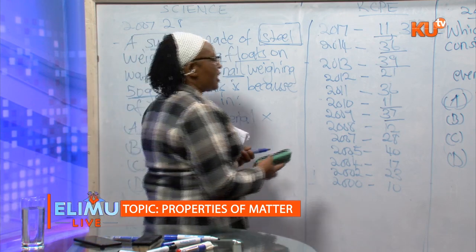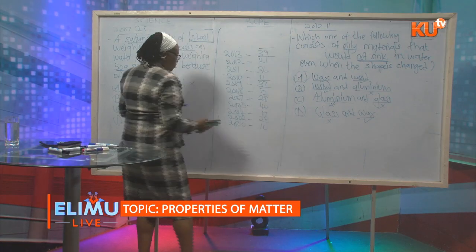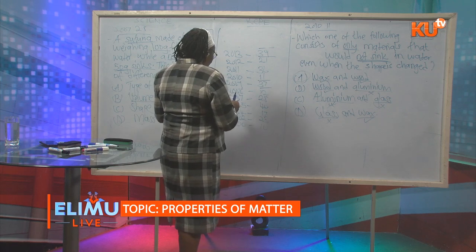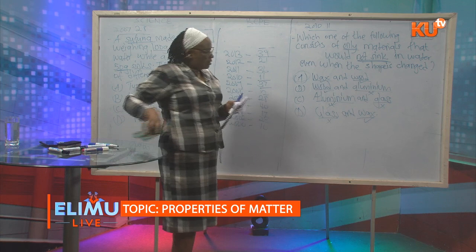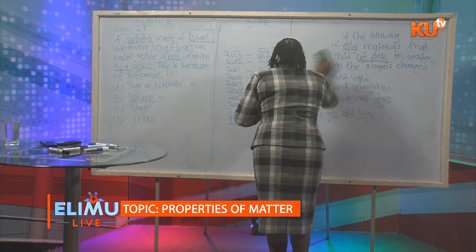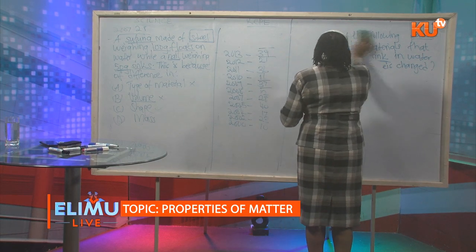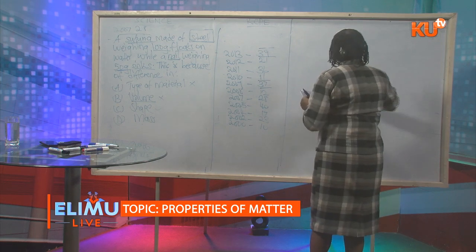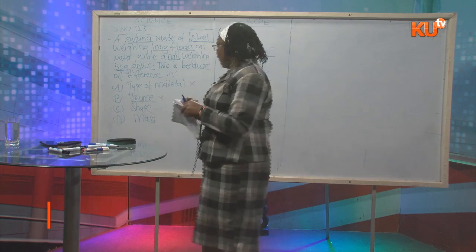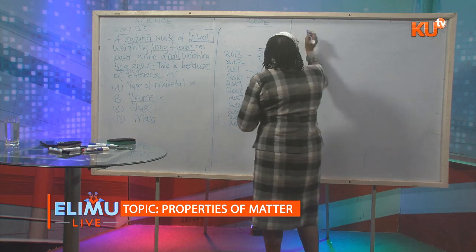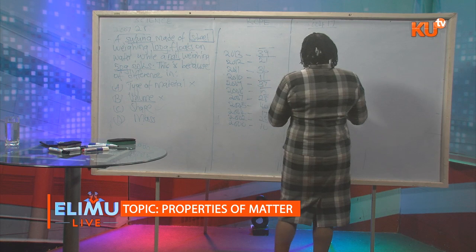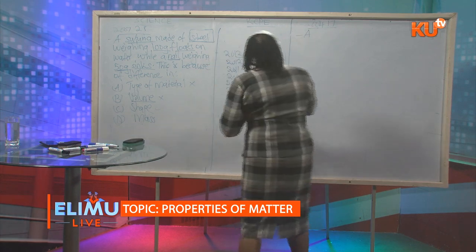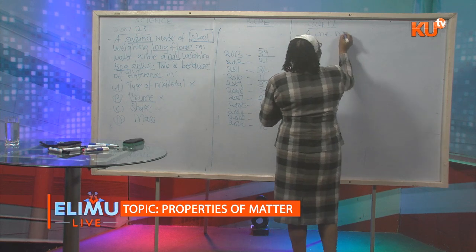We can have another question: 2004 number 17. Some questions are repeated so we move on. The question reads: a one-meter-long piece of wood floats on water, while a one-centimeter-long piece of iron rod sinks.